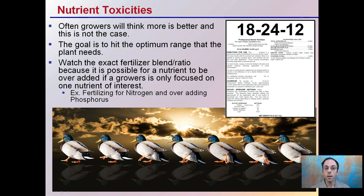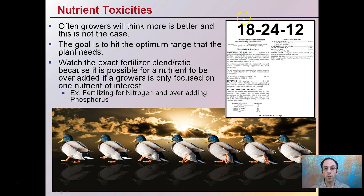In the opposite of that, there are also nutrient toxicities. Often growers will think more is better, and this is not the case. The goal is to hit the optimum range of what the plant needs. Watch the exact fertilizer blend or ratios you're using, because it's possible for a nutrient to be over-added if a grower only focuses on one nutrient of interest. For example, fertilizing for nitrogen and over-adding phosphorus. If we're focused on the nitrogen number — nitrogen, phosphorus, and potassium — we could be over-adding phosphorus. Look at the blend and the entire amount of fertilizer and all the nutrients it contains that your plant will be exposed to, keeping everything nice and consistent.